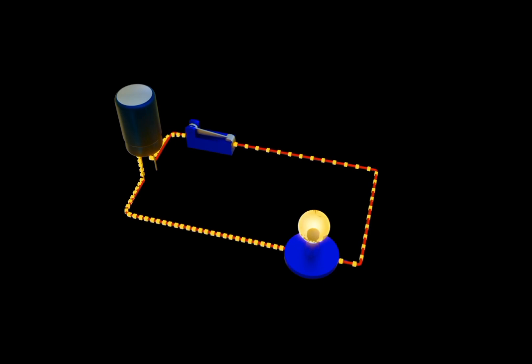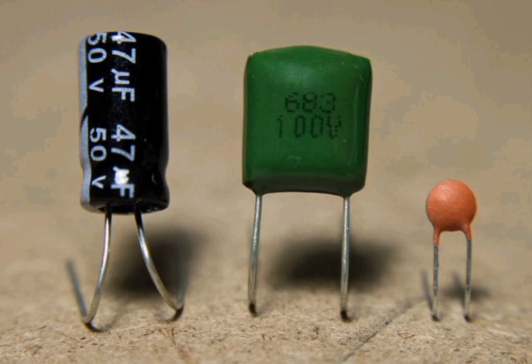Removing the battery from the circuit, the bulb still lights for some time, usually a few seconds to a few minutes, depending on the size and capacitance of the capacitor.